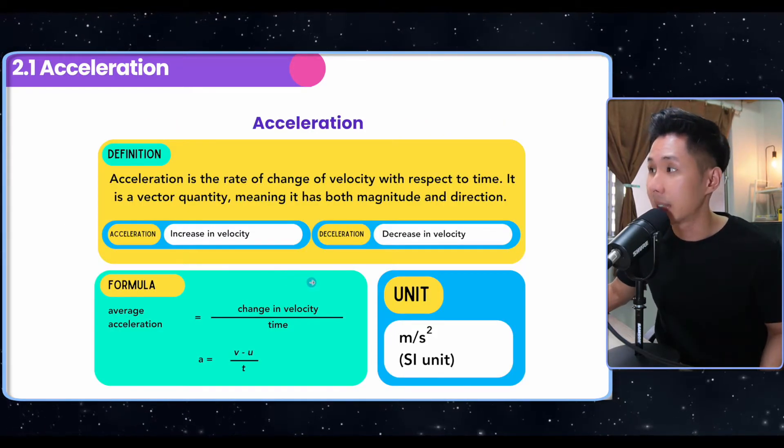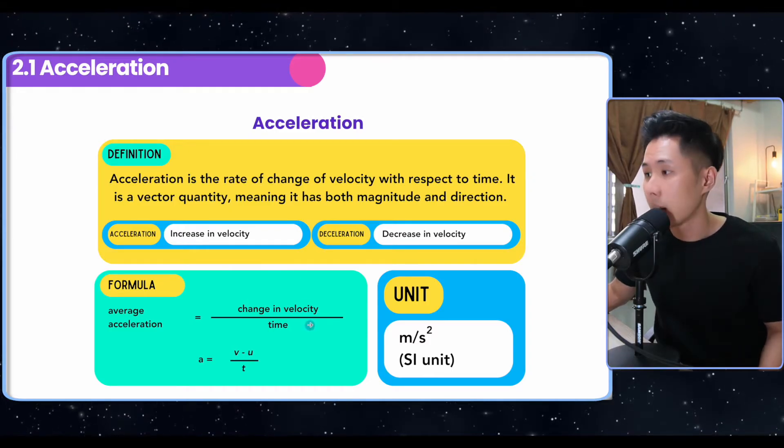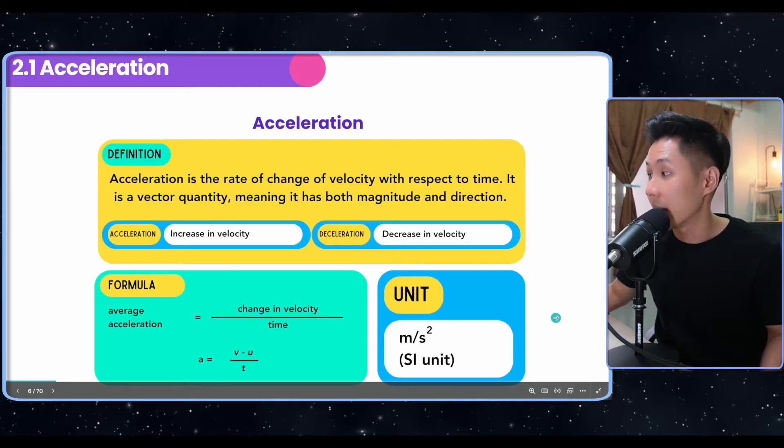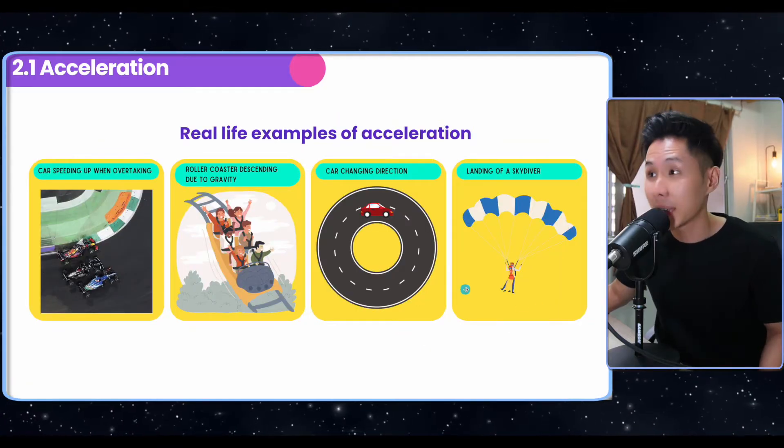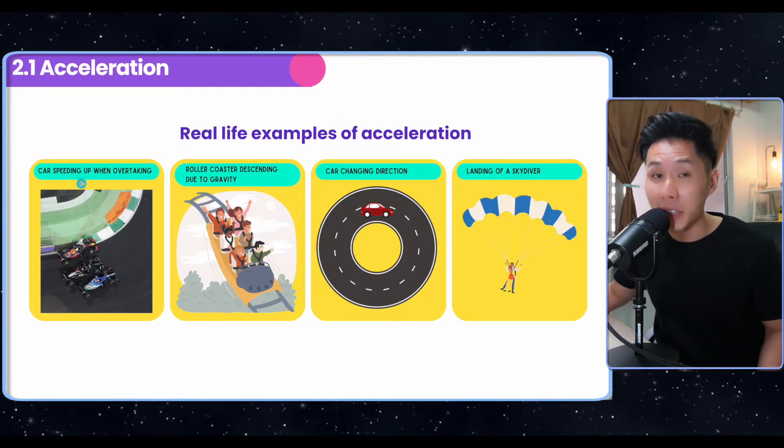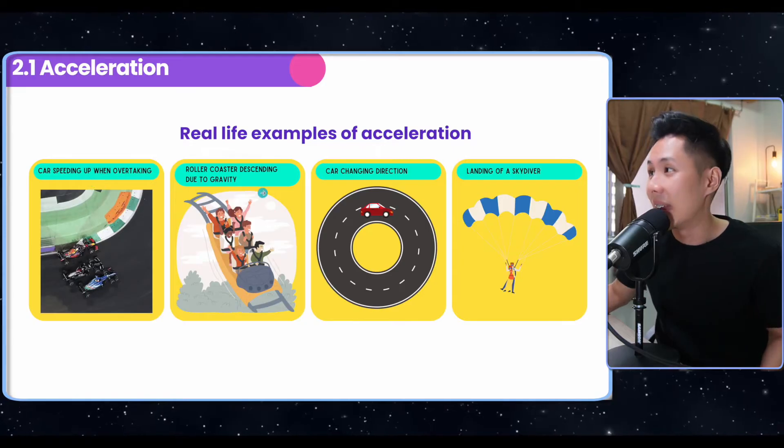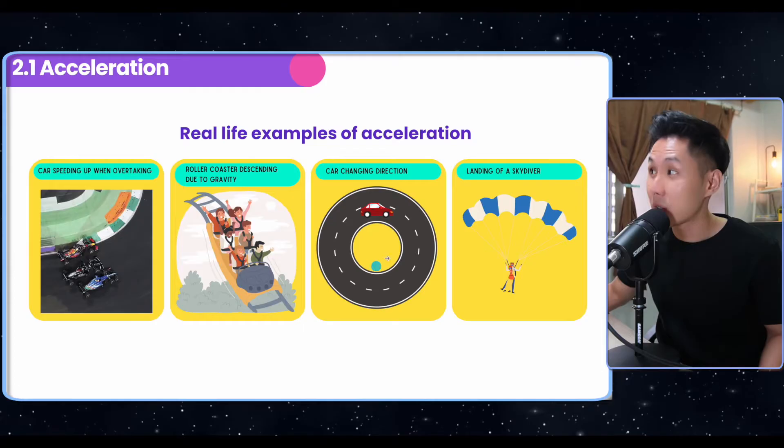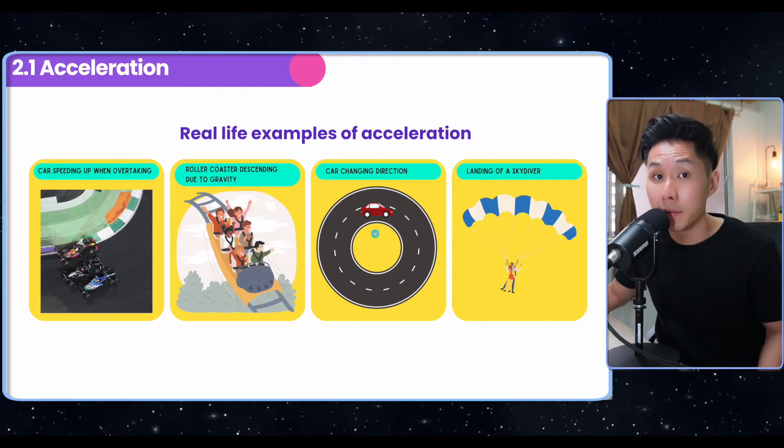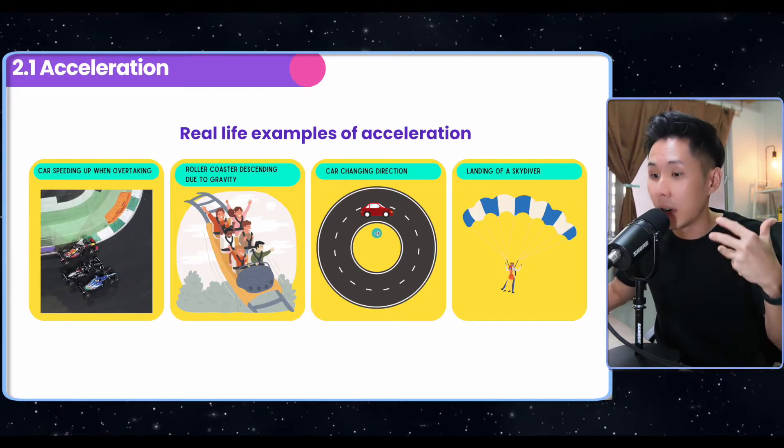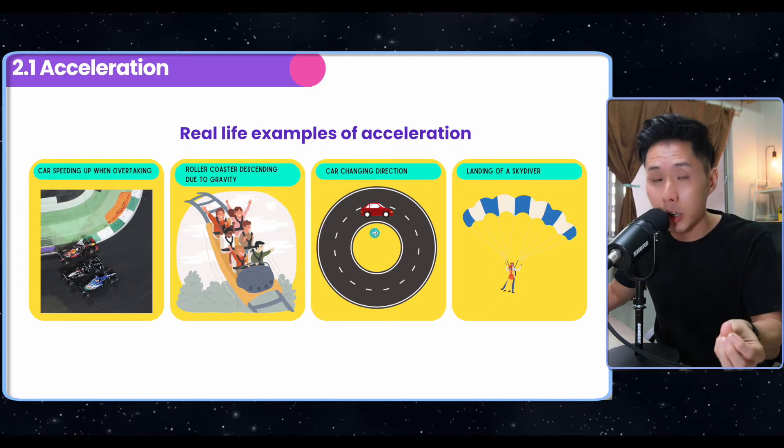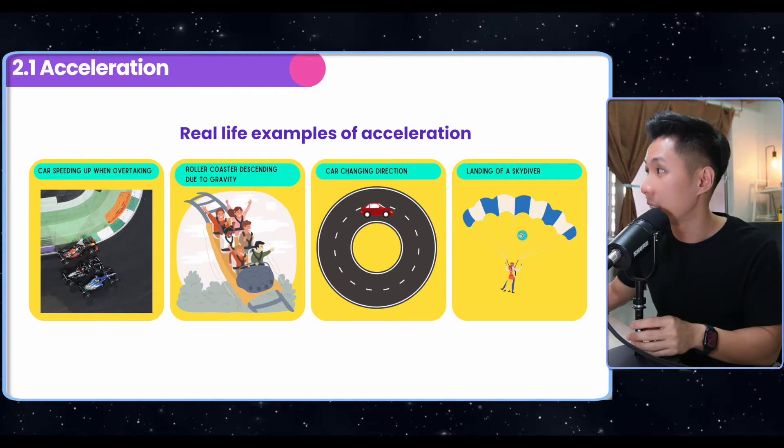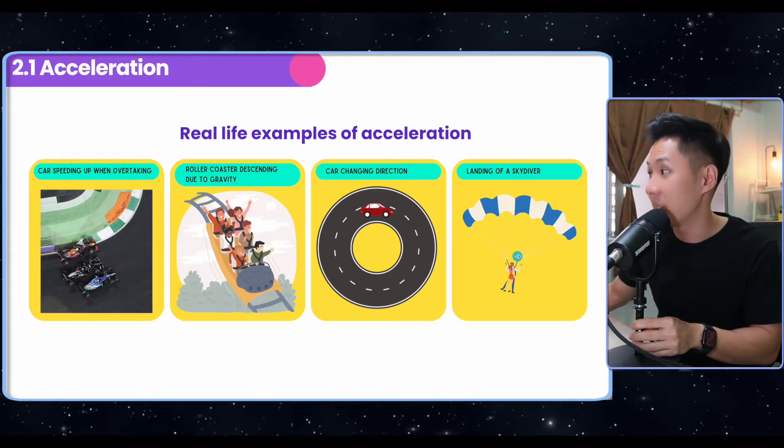Acceleration is the rate of change of velocity, and the formula is v minus u over t, and the unit is meter per second squared. Some real-life examples of acceleration: you will see a car speeding up when overtaking, a roller coaster descending due to gravity, and a car changing direction is also a form of acceleration, because when a car changes direction, velocity changes. When velocity changes, acceleration will change too. Last but not least, landing of a skydiver. That might be deceleration.